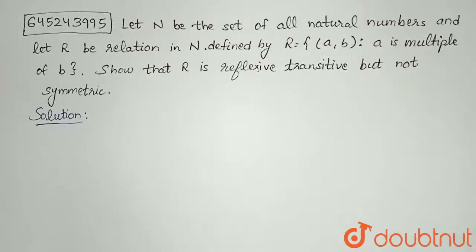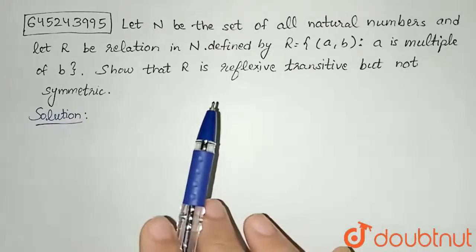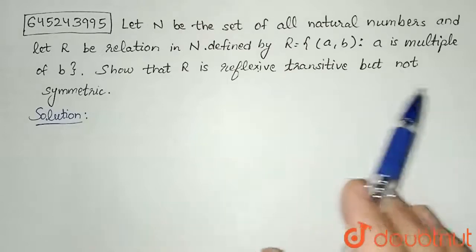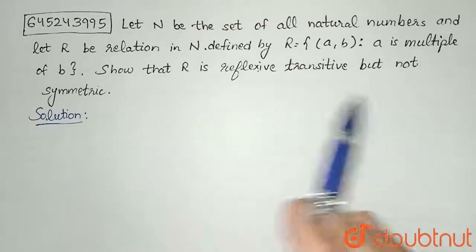Hello everyone, the question is let N be the set of all natural numbers and let R be relation in N defined by R equals (a,b) such that a is multiple of b. Show that R is reflexive, transitive but not symmetric.